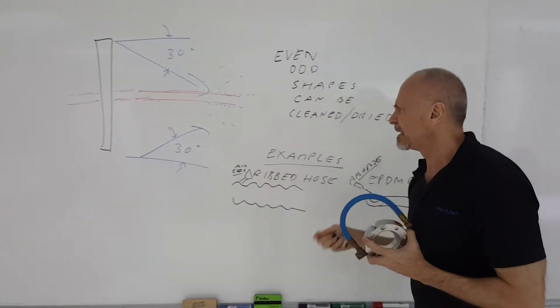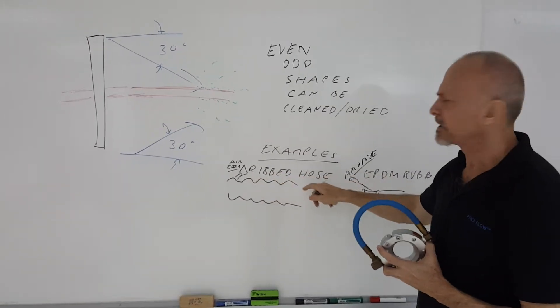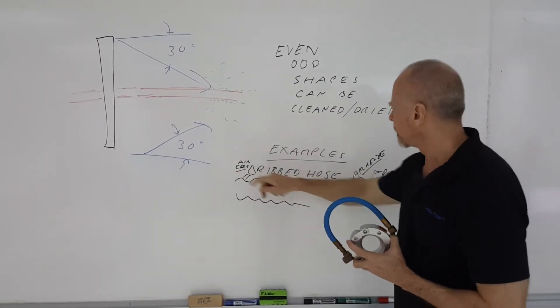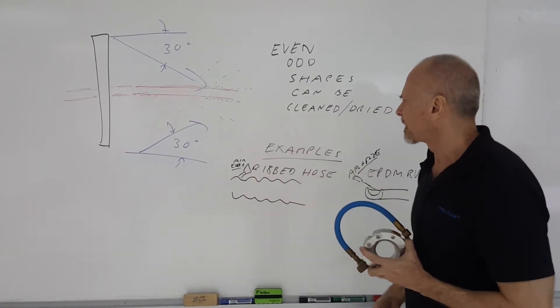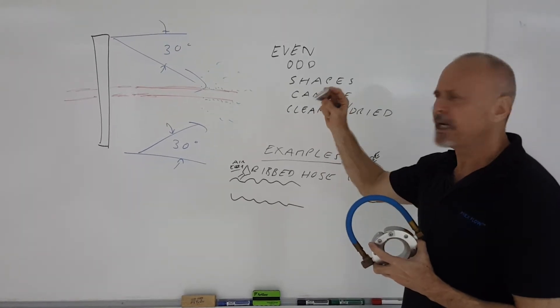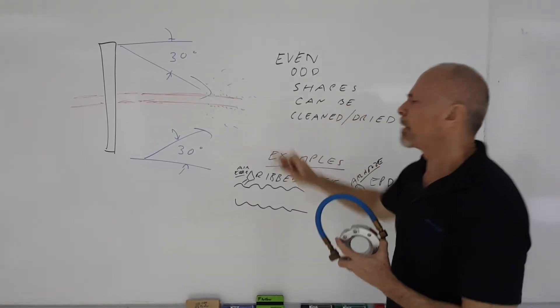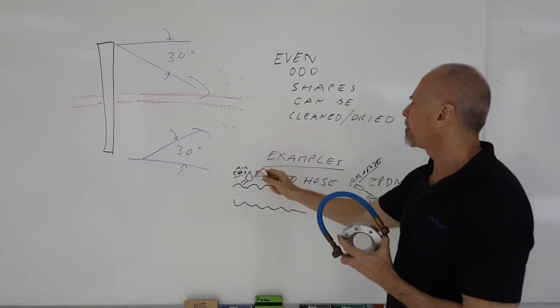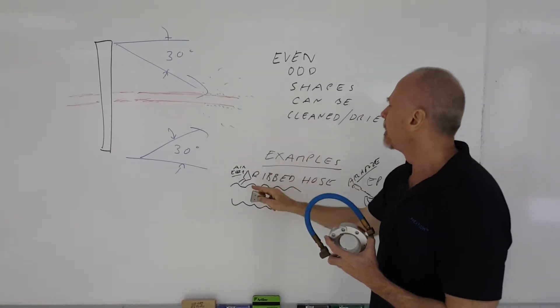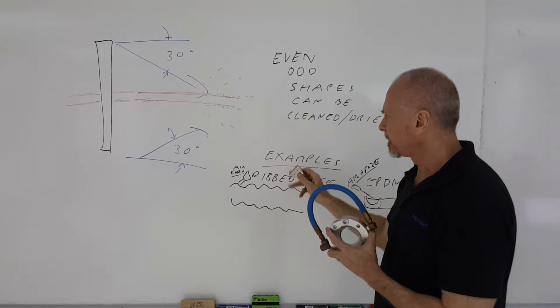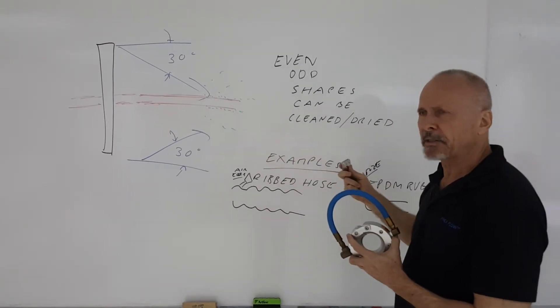However, let's say you have a ribbed hose, for example, that's being extruded. You may want to use a supplemental blow-off like our air edger to blow in at the backside to splash out that backside that may not be hit by that 30 degree air. And once it's splashed onto the other surface, then it can be more easily blown off.